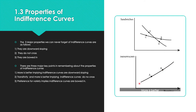Transitivity and 'more is better' together imply that indifference curves do not cross. A crossing curve is therefore invalid. Finally, preference for variety implies that indifference curves are bowed in toward the origin.